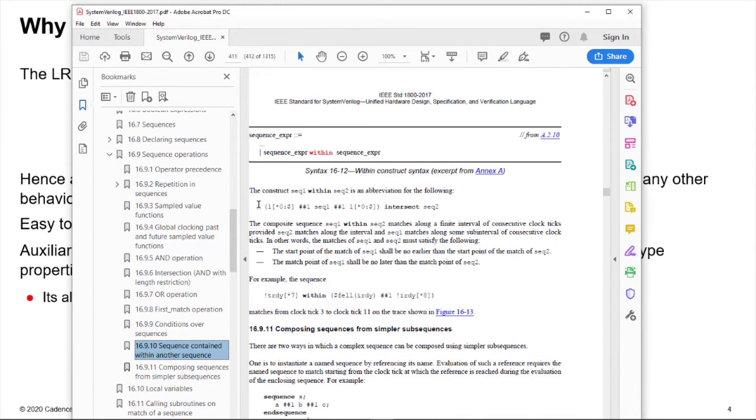If we look at sequence operations and sequences contained within another sequence, this goes on to describe how within works and the first thing it does, and it's really essential you remember this whenever using within, in fact personally I don't like using within for this reason so I would describe this in another way with sequences. If we say sequence one within sequence two, this is shorthand for writing this. So one, this one means true always, so true for zero to an infinite number of cycles, ##1 sequence one, then one cycle later true for zero to an infinite number of cycles.